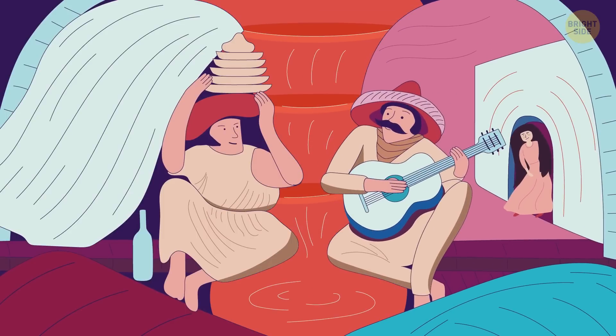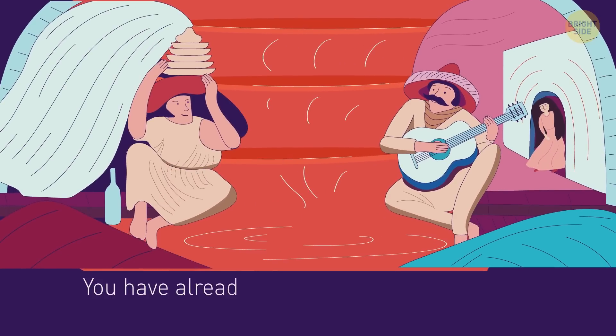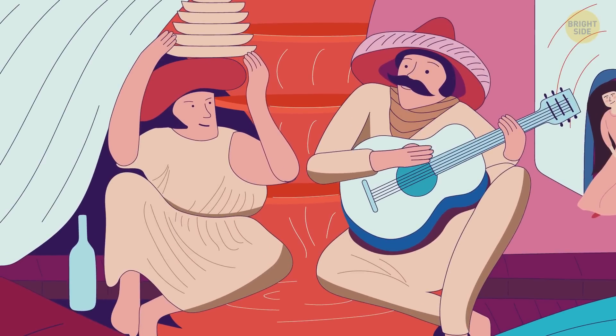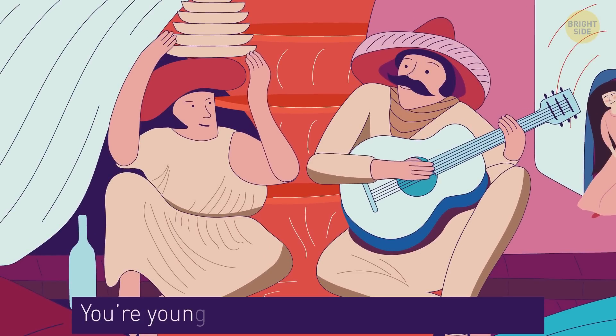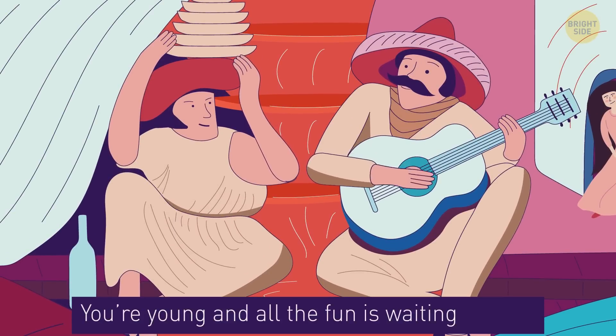And now, we will determine your psychological age. If the first thing you saw was old people's faces, then you have already lived a long and colorful life. You definitely have something to remember. But if you see a young couple sitting next to each other, then you're young and all the fun is waiting for you.